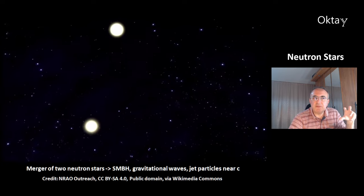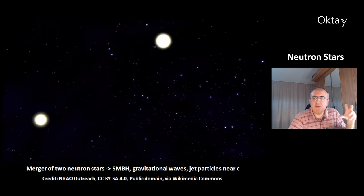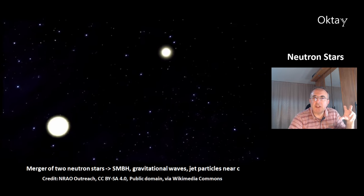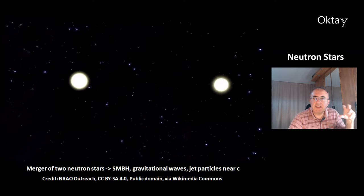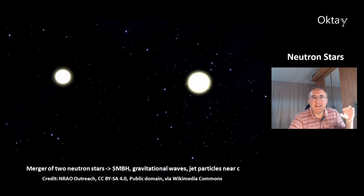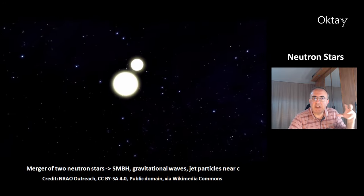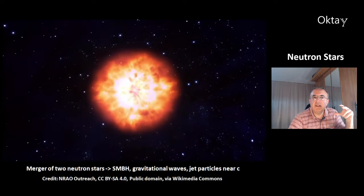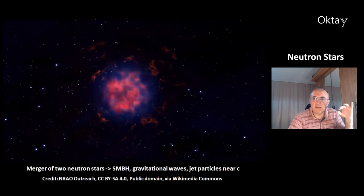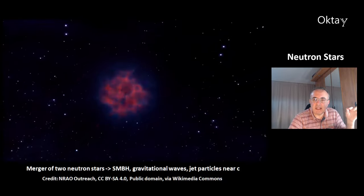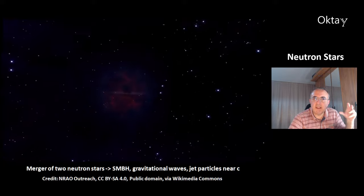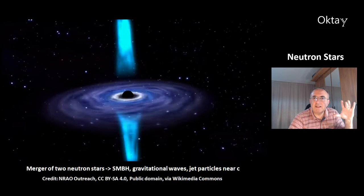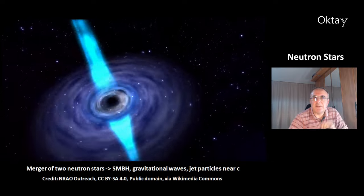This is how a merger of two neutron stars happens, forming a stellar mass black hole. In this process, gravitational waves are created. The stellar mass black hole has jet particles that travel at near the speed of light.